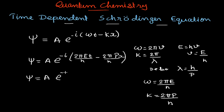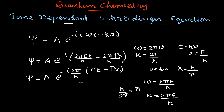Taking 2π/h common, psi = A e raised to minus iota·(2π/h)·(Et minus px). We know that h/2π is written as ℏ (h-bar). Taking 2π into the denominator, we get 1/ℏ, so the value of psi becomes: psi = A e raised to minus iota/ℏ · (Et minus px). This is our wave function — call it equation number one.